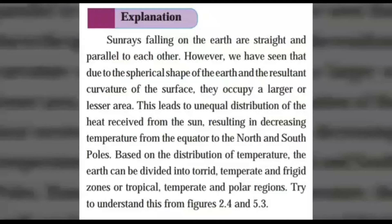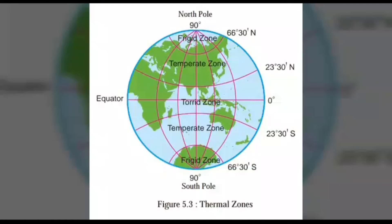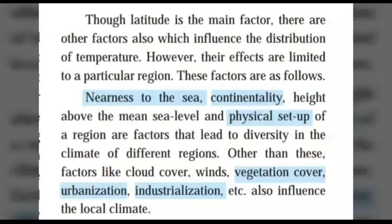Try to understand this from figure 2.4 and 5.3. Though latitude is the main factor, there are other factors also, which influence the distribution of temperature. However, their effects are limited to a particular region. These factors are as follows: Nearness to the sea, Continentality, height above the mean sea level, and physical setup of a region are factors that lead to diversity in the climate of that regions. Other than these factors like cloud cover, winds, vegetation cover, urbanization, industrialization, etc. also influences the local climate.